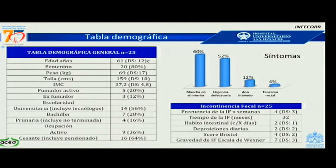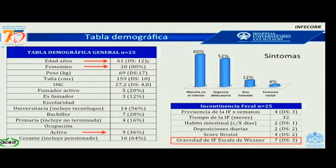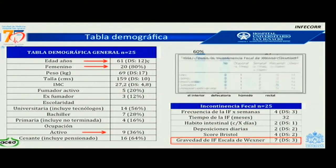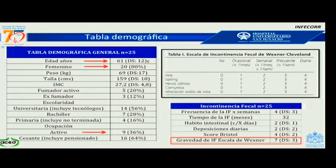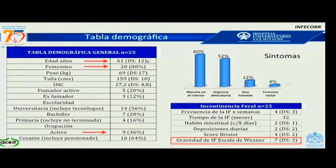Los resultados del estudio: 25 pacientes con una edad promedio de 61 años, el 80% mujeres, el 36% con actividad laboral y el 64% ya cesantes. La gravedad de la incontinencia en la escala de Wexner fue de 7, lo que corresponde a una gravedad moderada. Los síntomas más frecuentes fueron: mancha en ropa interior en un 60%, urgencia defecatoria en 52%, ano húmedo en 12% y tenesmo rectal en 4%, con pacientes que tenían más de un síntoma.